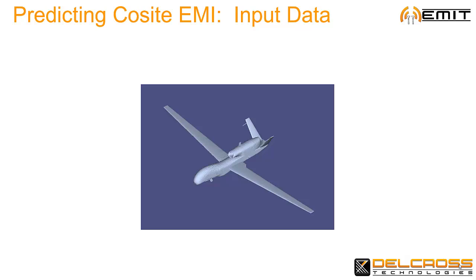EMIT starts with your platform, using models for onboard radios, antennas, and other RF system chain components. A CAD model of your platform is helpful for locating antenna placements, but not necessary.